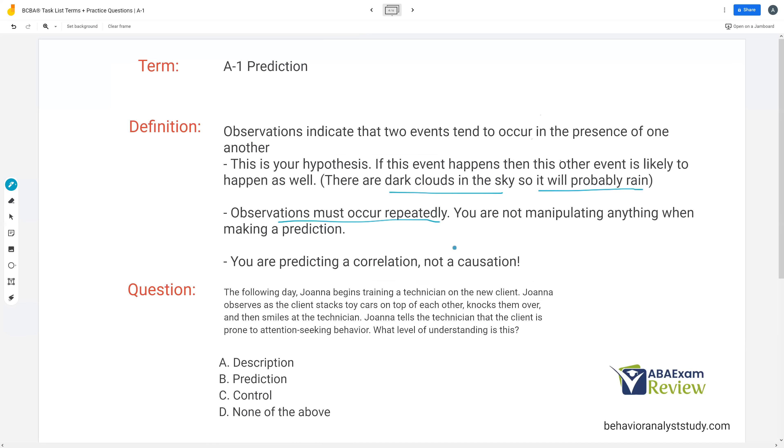You're not manipulating anything when making a prediction. So if you believe that the function of that behavior is to obtain a tangible, you're stopping there when you're making a prediction. You're not yet manipulating anything in the prediction stage. It's one level above description because we're no longer just observing. We're now making hypotheses and guesses, but we're not quite manipulating yet. And then you're predicting a correlation, not a causation.